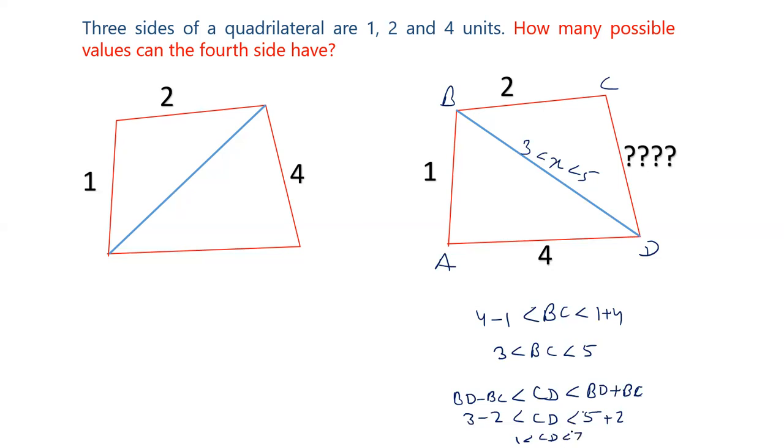Again, the third side we get between 1 and 7, which is the same as the previous case. Between 1 and 7, all the integer values 2, 3, 4, 5, 6 give 5 possible cases. This way, any case you take, 1-4 or 2-4, the same case will form.